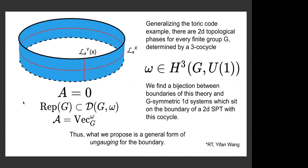Generalizing the toric code example is quite easy. There's a topological phase for every finite group and every three-cocycle on that group. What we find is that there's a bijection between boundary conditions of this gauge theory and 1D systems with a global symmetry but with a particular anomaly determined by omega. In other words, there are boundaries of an SPT determined by this cocycle, and the SPT is related to the topological order by gauging the symmetry. Choosing the reference boundary condition and putting it on the cylinder geometry is a way to un-gauge the symmetry at the boundary.